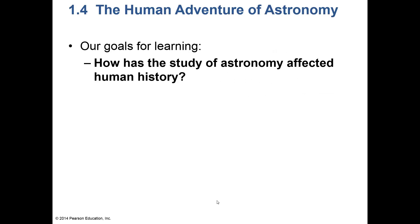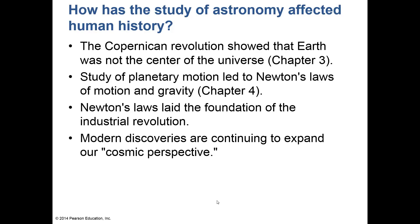How has the study of astronomy affected human history? Pre-1600s AD, people thought the earth was the center of everything — the Ptolemaic model. Then in 1609, Galileo used a telescope invented by Italian lens makers to observe the solar system. Nicholas Copernicus argued that the earth was not the center of the universe. The study of planetary motion led to Isaac Newton's laws of motion and gravity, which laid the foundation of the industrial revolution.